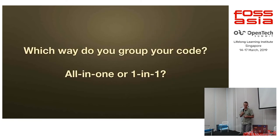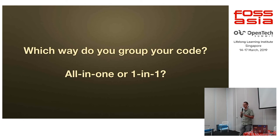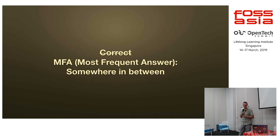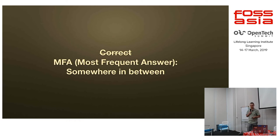I'd like to see your hands — if you're using Terraform, how do you structure or group your code? On one hand, all-in-one where you have a main.tf file and put everything there. Nobody. And one-in-one — who feels that's better? No. The most frequent answer among people who use Terraform is somewhere in between. It's very seldom that you need to stick to one of these, because it's unlikely you'll start your day thinking you're going to make everything perfect from day one.